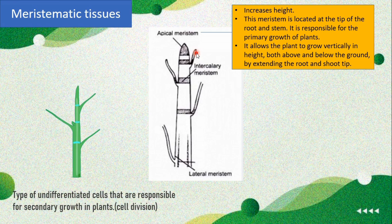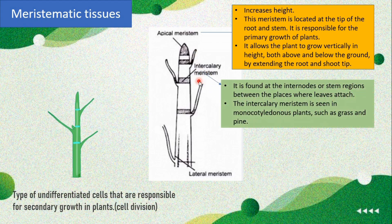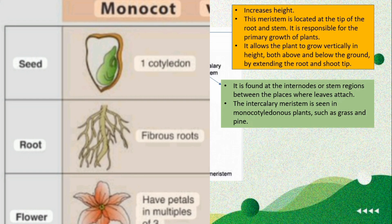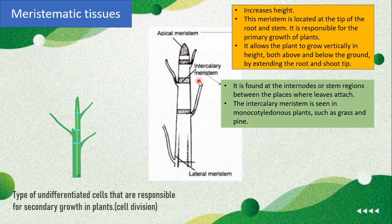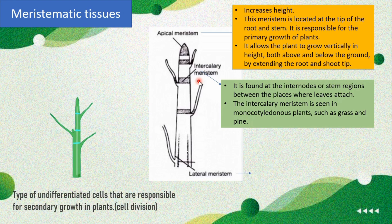Intercalary meristem — 'inter' means between — is found at the internodes, the stem regions between the places where the leaves attach. It is basically seen in monocot plants. Monocot means the ones which have a single cotyledon, for example rice and wheat. So intercalary meristem is found at the internodes.